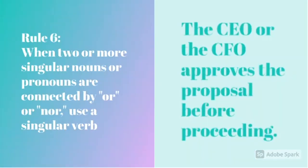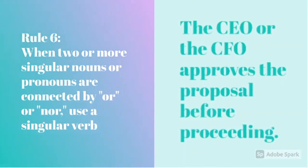Rule 6 is, when two or more singular nouns or pronouns are connected by or or nor, use a singular verb. An example is, the CEO or the CFO approves the proposal of the proceeding. Here, we can see that we are using or, so the verb is singular.